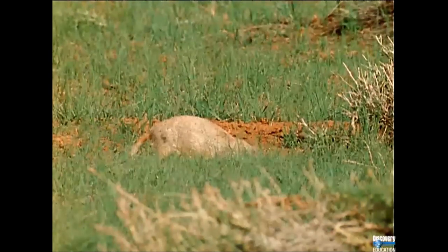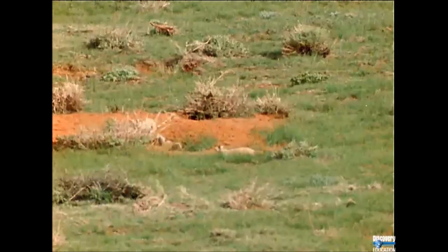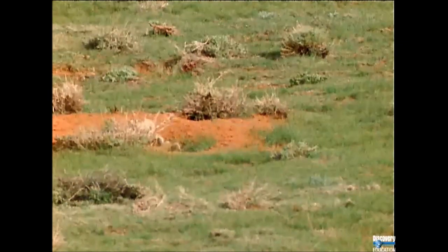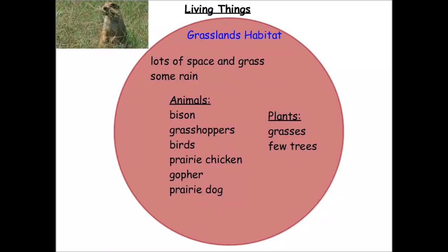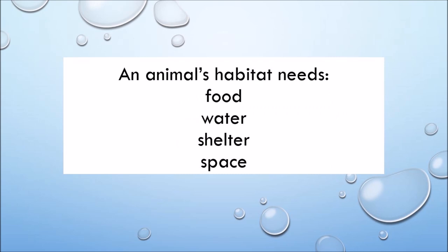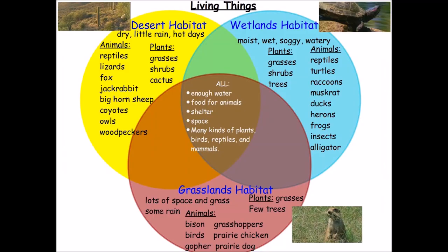Prairie dogs, like most grassland plant eaters, graze in daylight so they can watch for predators. If danger is near, the guard signals to the other animals to run for cover. The grasslands have lots of space and lots of grass. Do grasslands have the four essential parts of an animal habitat? Yes! All of the habitats we looked at had enough water for their animals, food, shelter, space, and many different kinds of animals that made it their home.